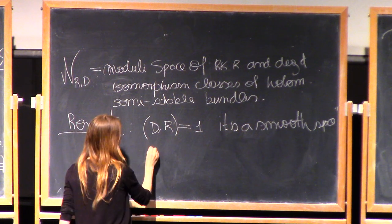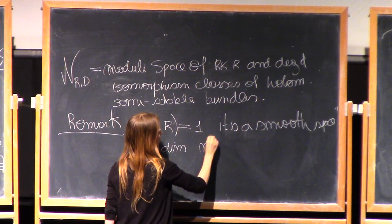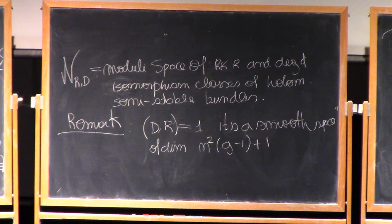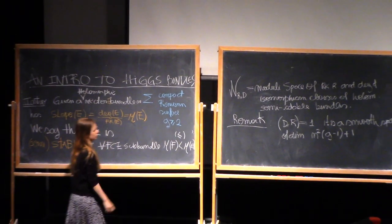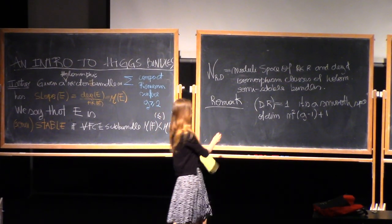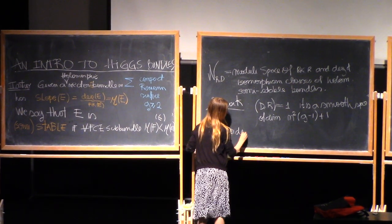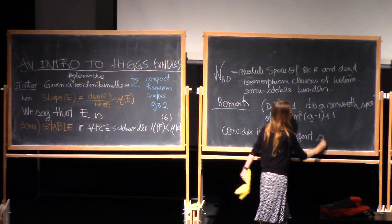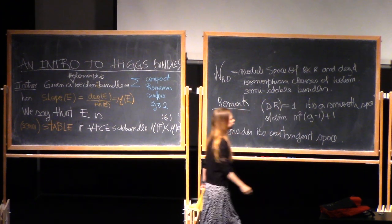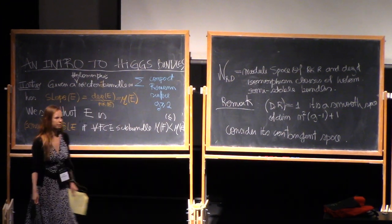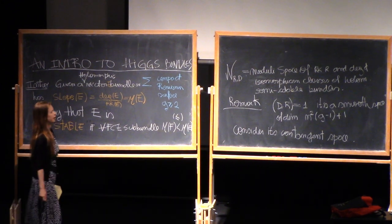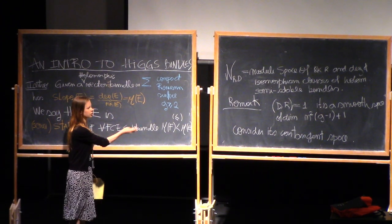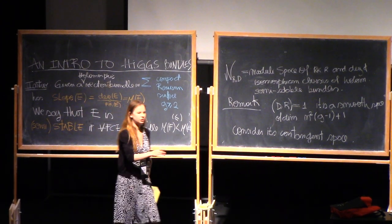The dimension is R squared times (g minus 1) plus 1. I want to look not just at the moduli space, but at its cotangent space. We're approaching Higgs bundles from a different perspective than the self-duality equations — it's a complementary direction. Higgs bundles can appear from many different ways.